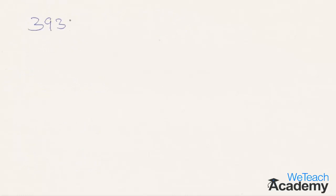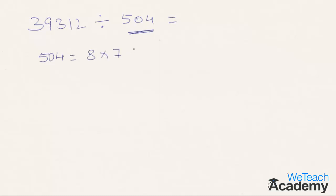Let us take one more example. Let us divide the number 39312 by a 3-digit divisor, that is 504. 504 is again a bigger divisor. The first step is to break the divisor 504 into its own factors. 504 can be broken into 8, 7, and 9. So 8, 7, and 9 are the factors of 504. The second step is dividing 39312 by its first factor, that is 8.